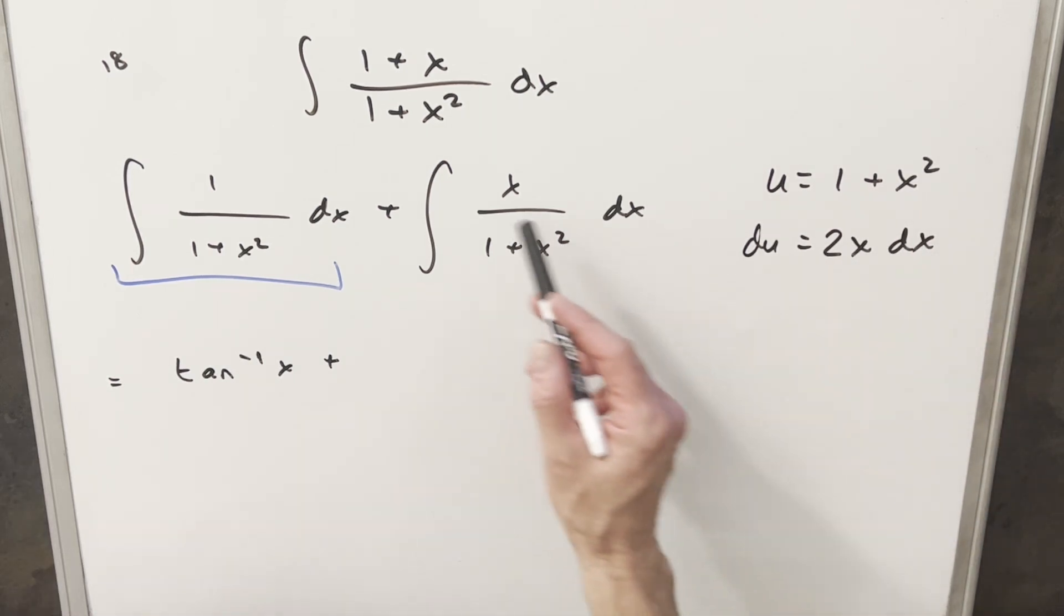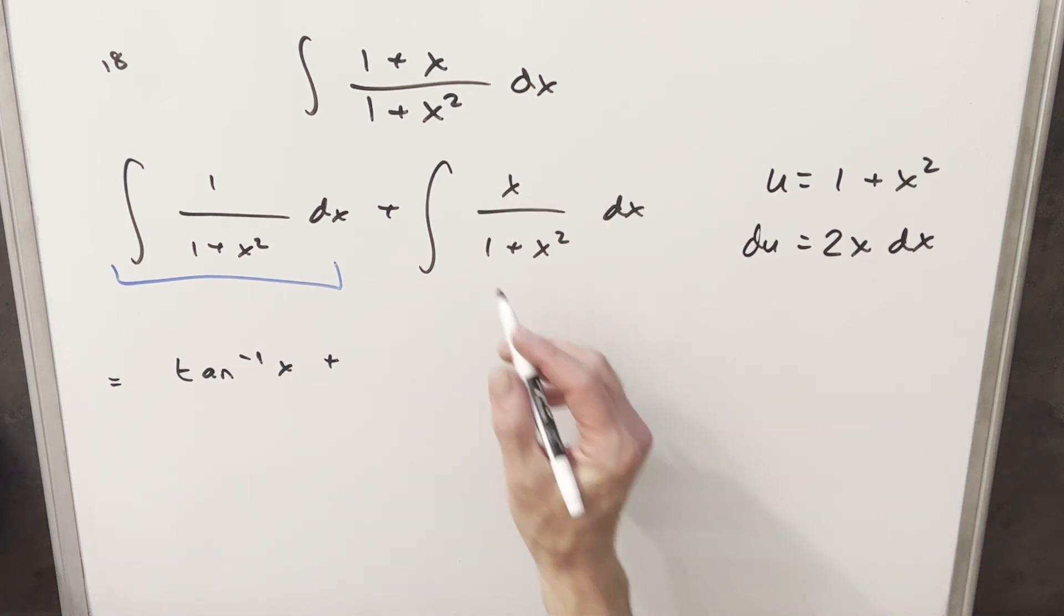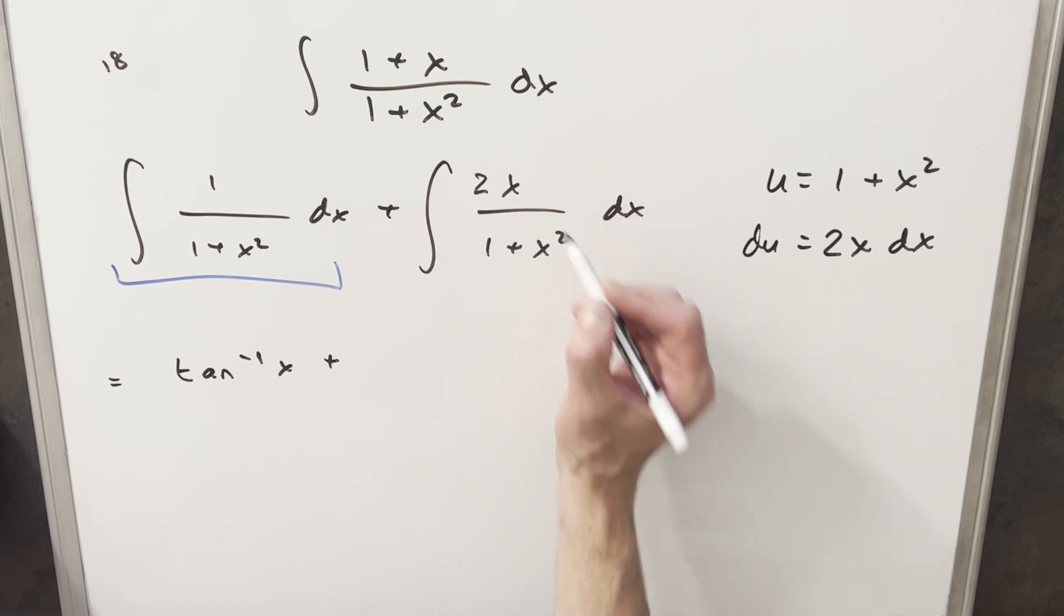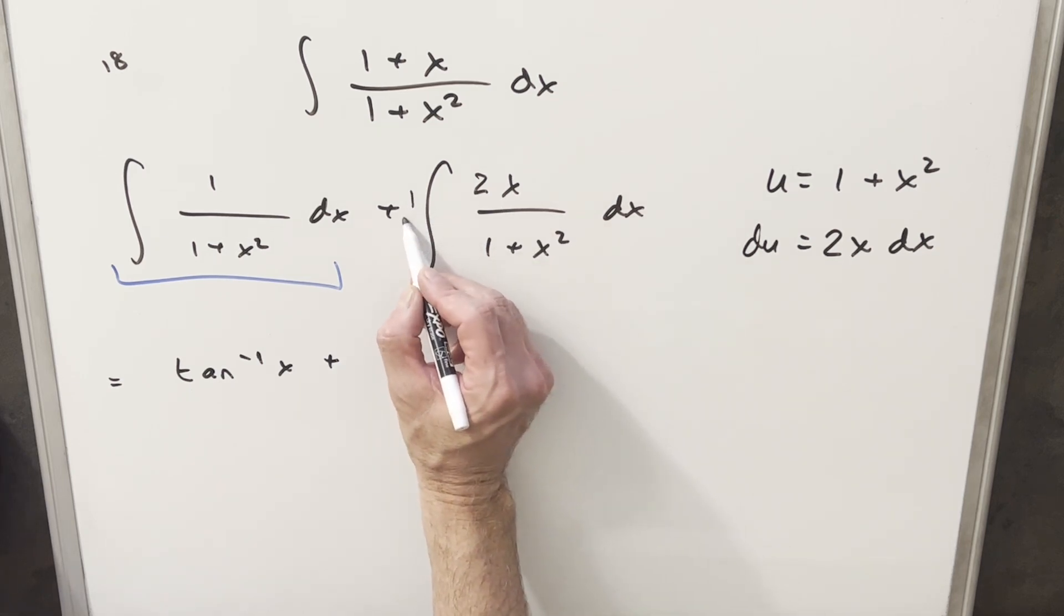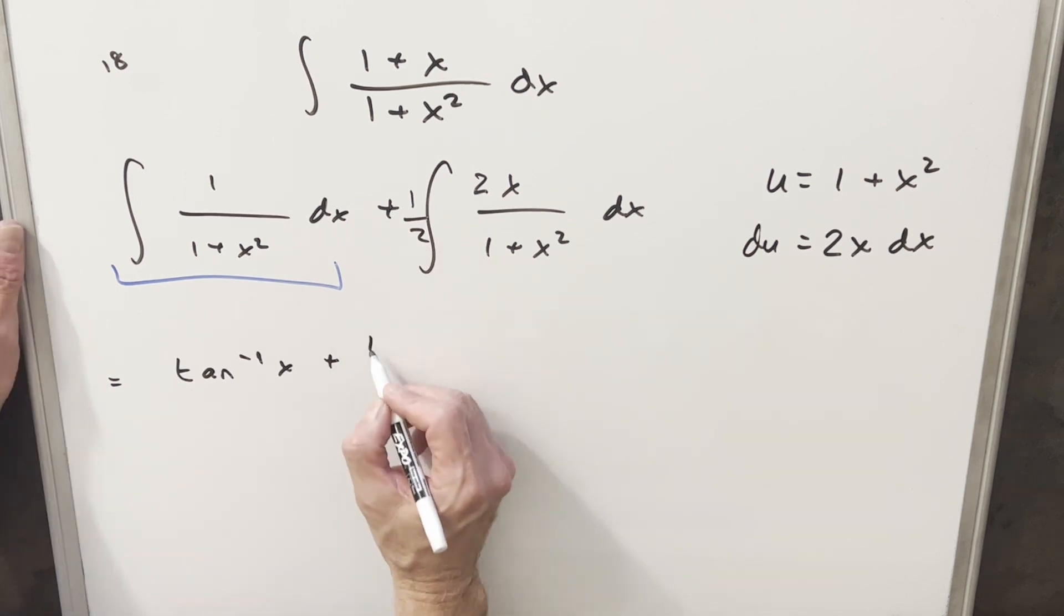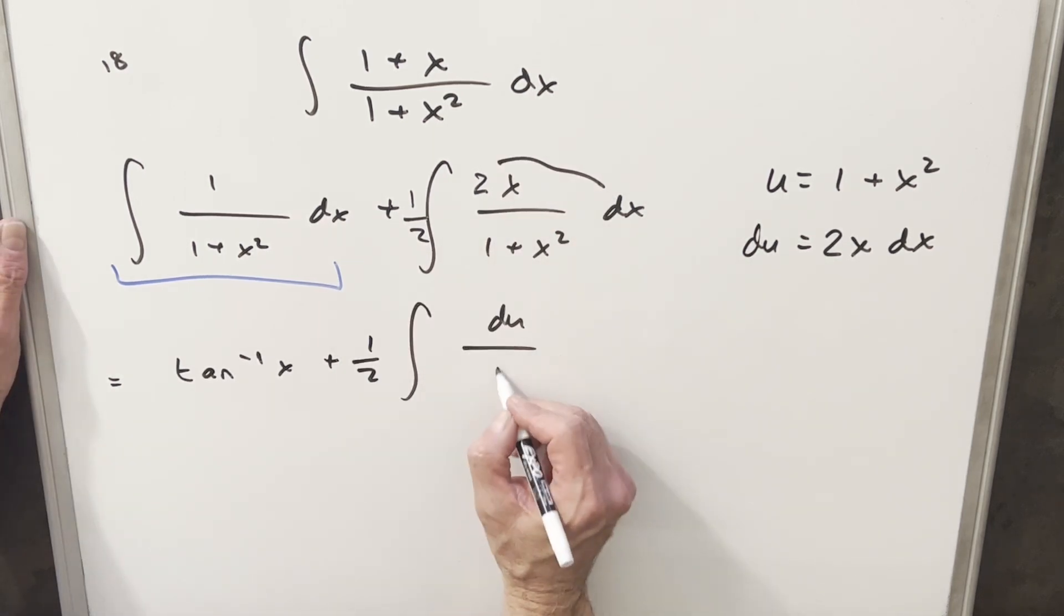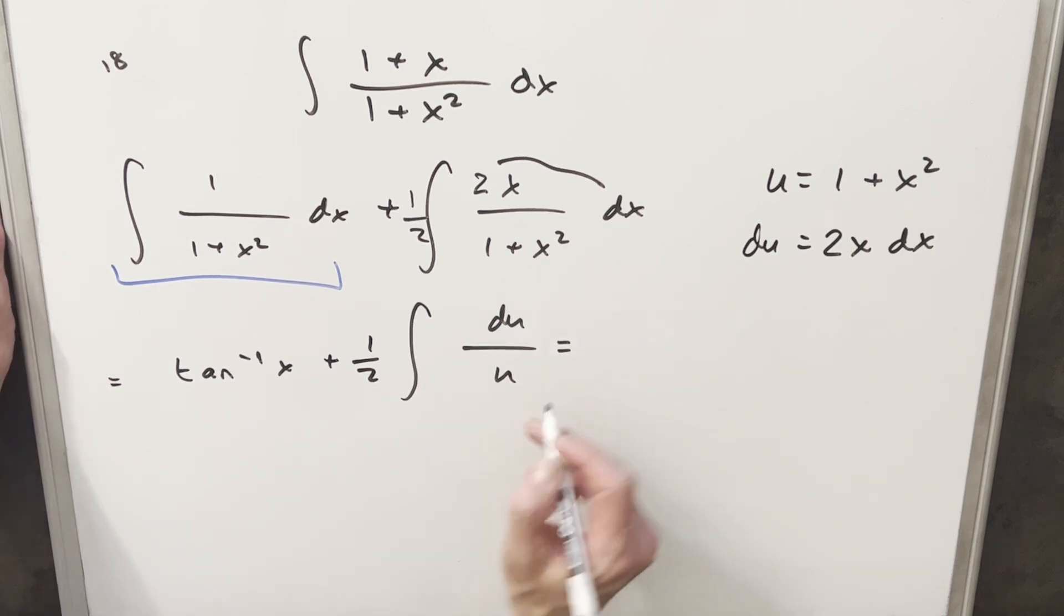Now to set up the u-substitution, I'm just going to make the numerator here match my du value, just to make this easy on myself. So I'm going to multiply by 2 here. But if I multiply by 1 half out front, I'm not changing it because we're just multiplying by 1. So then I'll go ahead, we'll make the substitution. So this here, we're going to have du over u. So then I can just go ahead and integrate this.